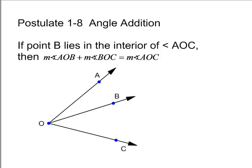There's a definition: point B lies on the interior of angle AOC, and you have that ray drawn from A through B. Then those two angles add up to the whole — so the measure of angle AOB plus the measure of angle BOC equals the measure of angle AOC.